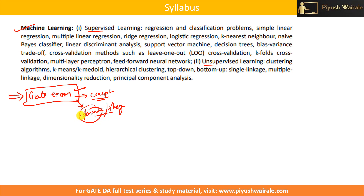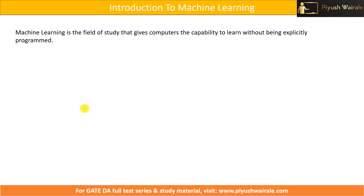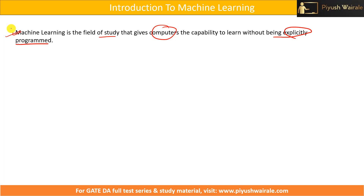Now when we talk about machine learning — what is machine learning? Machine learning is the field that gives computers the capability to learn without being explicitly programmed. This is the technical, bookish definition of machine learning. We are not going into detail about the definition or history behind machine learning because it is not required from a GATE exam point of view.